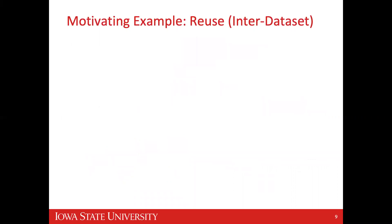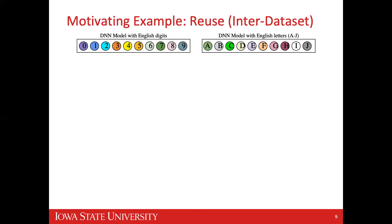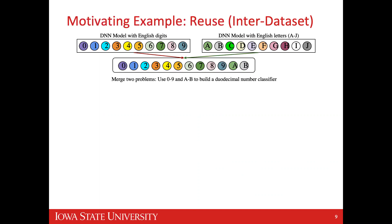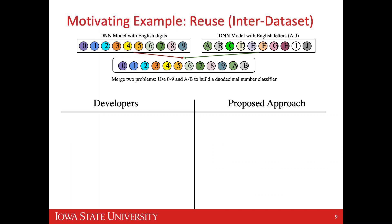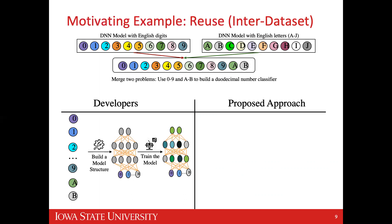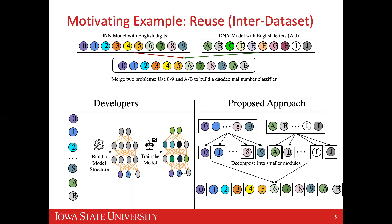Another example is inter-dataset reuse. Here we have two classification problems: one with an English digit model and one with English letters A to J. We want to build a duodecimal classifier — 0 to 9 and A, B. Instead of merging datasets and retraining, we propose to decompose into smaller modules, take all 0 to 9 modules from the English digit dataset and A and B from the English letter dataset, and create a new modular classifier.